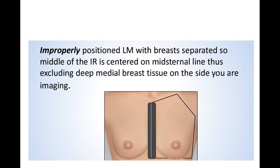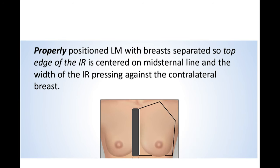An important point for lateral views is that we do not place the image receptor on the mid-sternal line, because doing so would cause the deep medial breast tissue on the side being imaged to be lost. To avoid this, we place the image receptor so that it is pressing against the contralateral breast. When it presses the contralateral breast, the posterior part of the breast is properly visualized and the posteromedial aspect is not lost in the image.